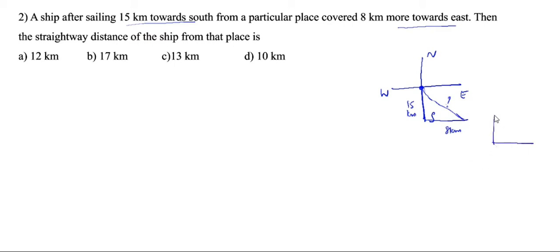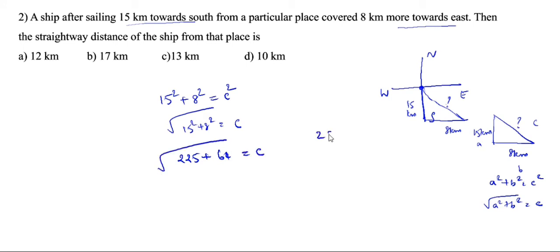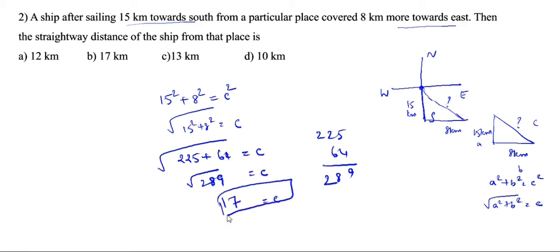We draw the triangle. This is 8 kilometers, this is 15 kilometers. Using the Pythagorean theorem: A squared plus B squared equals C squared, or root of A squared plus B squared equals C. A is 15 squared, B is 8 squared. Root of 15 squared plus 8 squared equals C. 15 squared is 225, 8 squared is 64. Root of 289 equals C. Root of 289 is 17. So 17 kilometers is the answer.